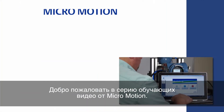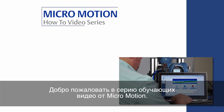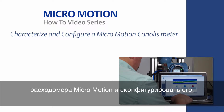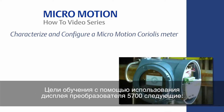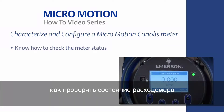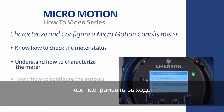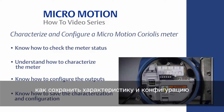Welcome to the Micromotion How-To video series. In this video we will cover how to characterize and configure a Micromotion Coriolis meter using the model 5700 transmitter display. The learning objectives are the following: know how to check the meter status, understand how to characterize the meter, know how to configure the outputs, and know how to save the characterization and configuration.